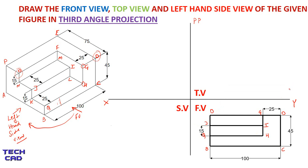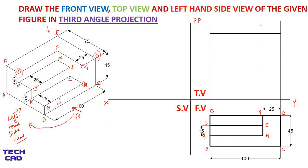Now I am going to make the top view using projection lines from the front view going upward. When you see from the top you will see P, E, D, G. I make a line that cuts the projection lines from the front view — this automatically gives me 100 mm, so these are the P and E points. In the same way, 75 mm downwards gives me point D.